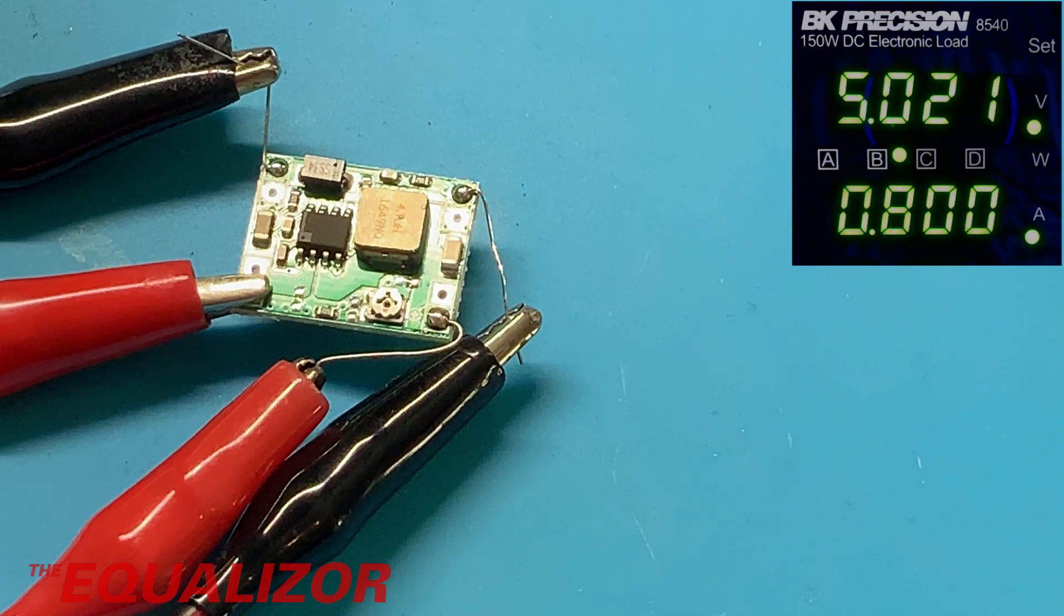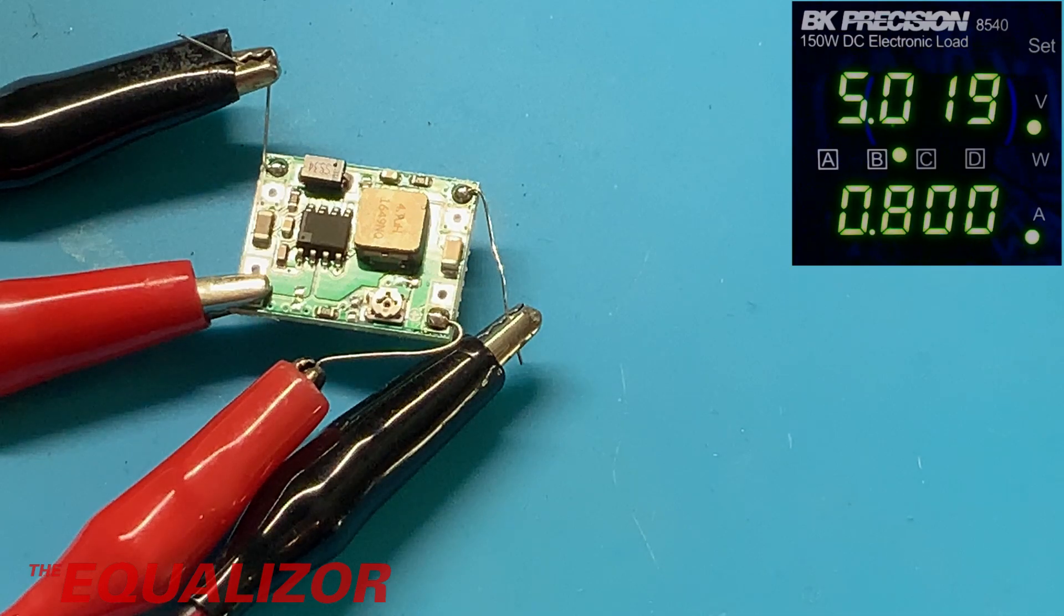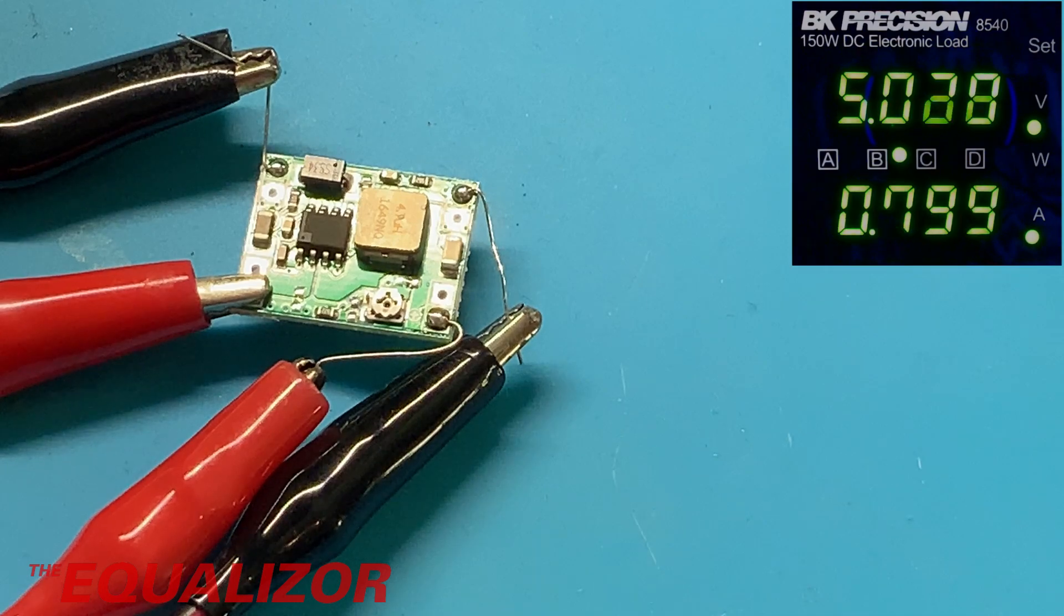Yeah nothing wrong with that at all. Just over 5 volts at 800 milliamps that will be absolutely perfect for the car. That's not a bad little buy from AliExpress really. They were quite cheap I think they were 80p each shipped and I bought five of them. I'm sure I'll find a use for them elsewhere but that's about it really.